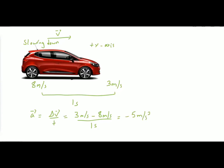Even if the velocity is towards the positive x-axis, the acceleration can be negative, because acceleration depends on the change in velocity. If velocity is decreasing — even while moving in the positive x-direction — the acceleration is negative, meaning it is directed opposite to the direction of the velocity, along the negative x-axis. This is negative acceleration.